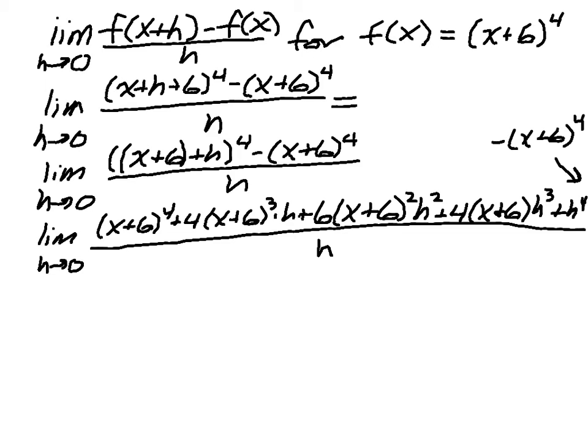Now if you notice when I simplify this in the numerator, I have (x+6)^4 and I have a minus (x+6)^4, so that's actually going to cancel out, which I'm going to do right now. There and there, those cancel out.